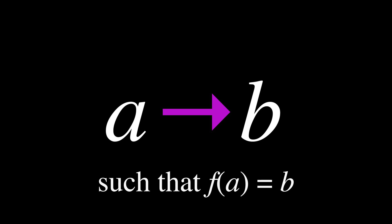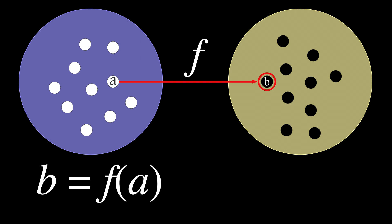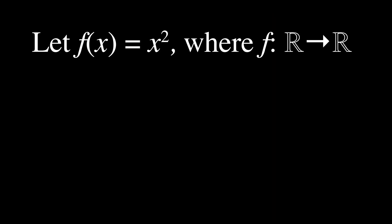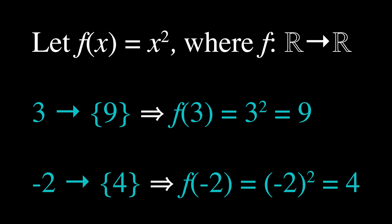Suppose the value is b — then the function takes the value b if there exists some a in the domain such that f(a) = b. Hence, b is the image of a under f, denoted as f(a) or sometimes as image of f(a). For example, let f(x) = x² be a function that maps real numbers to real numbers. The image of the element 3 under this function is 9, since f(3) = 3² = 9. Similarly, the image of the element -2 under this function is 4, since f(-2) = (-2)² = 4. The image of an element under a function is a subset of the function's codomain.